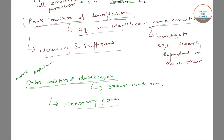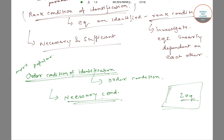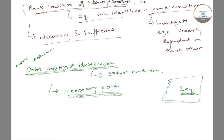It is possible that the equation is unidentified even though the order condition says that it is identified. That is, if the equations are identified, then they must satisfy this condition, but it is possible that the equation satisfies this condition and still is unidentified. However, when there are only two equations, the order condition for identification works well and can be trusted. Though it is a necessary condition, it works well when there are only two equations.